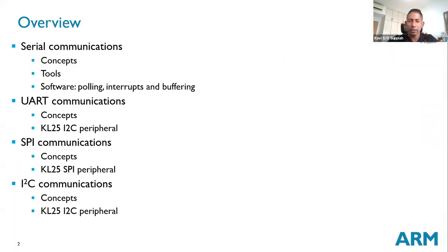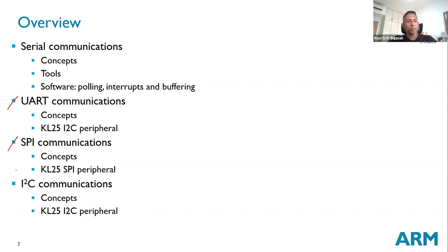Serial communications is something you have been exposed to before. We're going to look at it from the ARM and KL25Z perspective. The KL25Z has a comprehensive range of communication protocols. We're going to focus on UART, but we also have SPI and I2C. All three have the same objective: you want to serialize data, and by serializing data you reduce the number of lines you need to send data from one point to another.